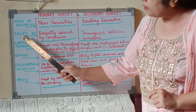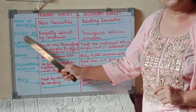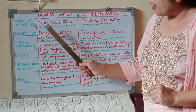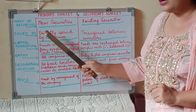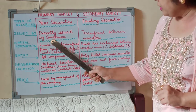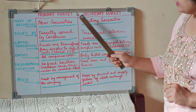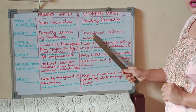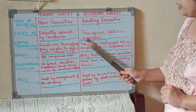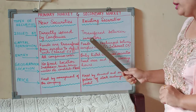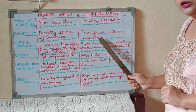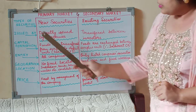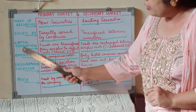The second basis is on the basis of who issues it, that is, issued by. In a primary market, the financial securities are issued directly by the companies. On the other hand, in the secondary market, the financial instruments or securities are transferred between the investors, because they are already in existence — they have already been floated into stock exchanges through the primary market.